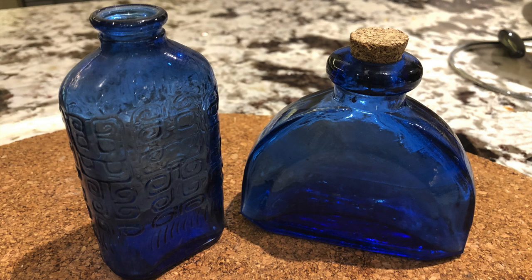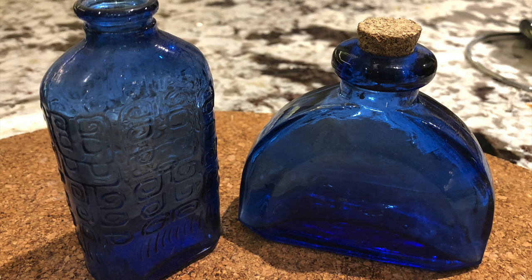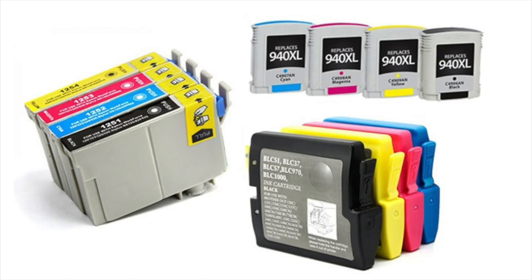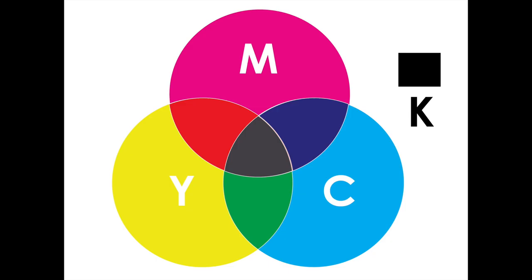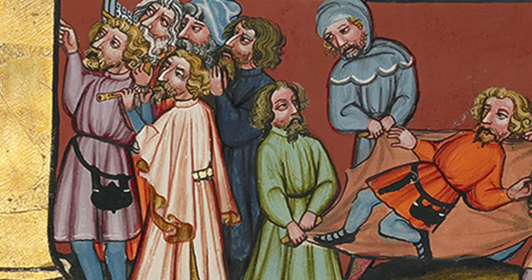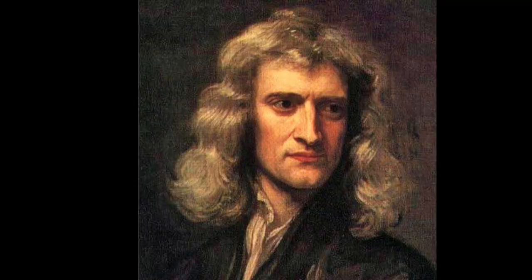Subtractive colors take advantage of the light that's reflected off objects. So with these glass bottles, white light shines on them and the green and red light is absorbed, and what remains is what we see reflected — we see this as blue. We most commonly see it in the printing industry, and most of us have a printer that has these cartridges. We refer to this system as CMYK.